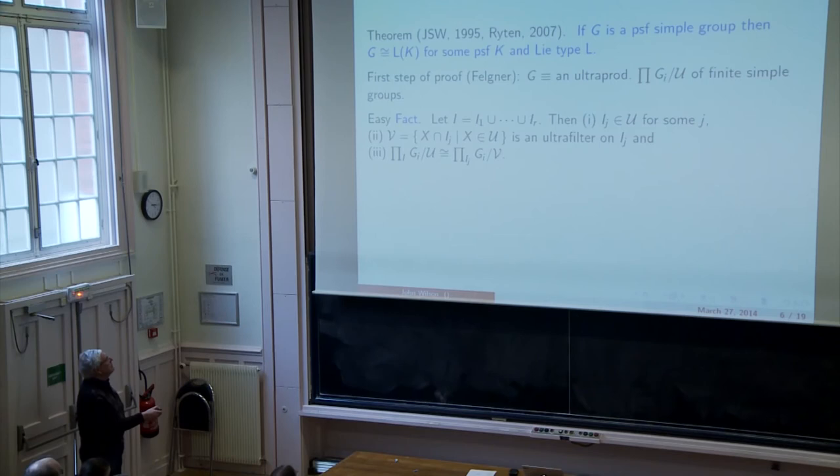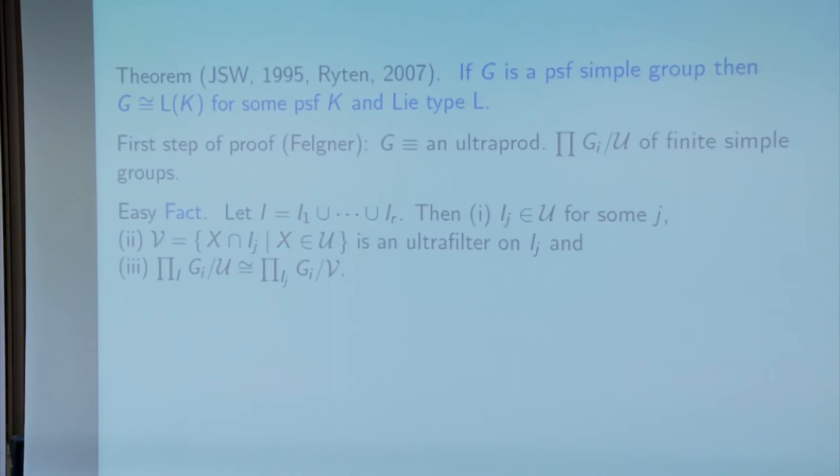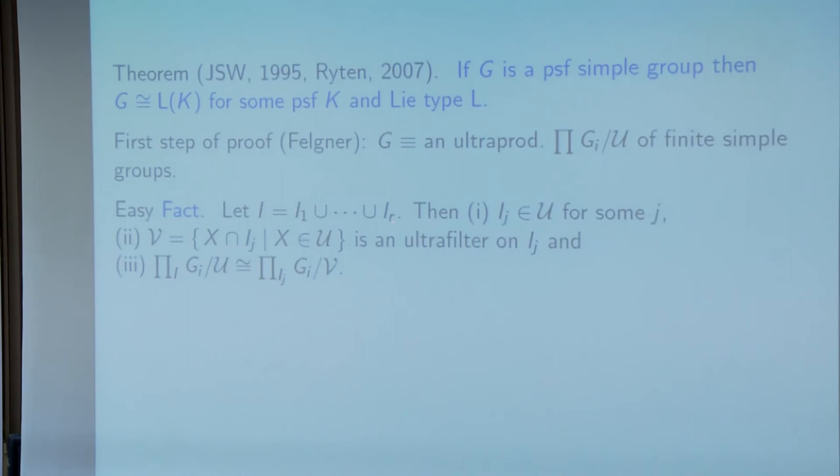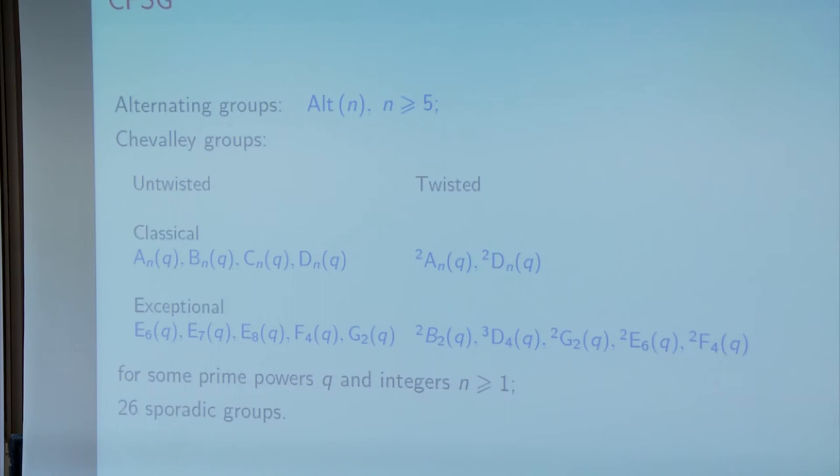Now there are a couple of rather easy facts about ultraproducts that I should remind you of. If the index set on which the ultrafilter is defined is a union of finitely many subsets, I1 through IR, then one of the sets of course has to lie in the ultrafilter. And then the set of intersections of elements of the ultrafilter with that good IJ is an ultrafilter on the good IJ. And the original ultraproduct is isomorphic to the ultraproduct of the groups just coming from this smaller class. So you see, in this ultraproduct, my ultraproduct of finite simple groups, I can assume that all or none of these groups are alternating. I can have them either all alternating or none alternating.